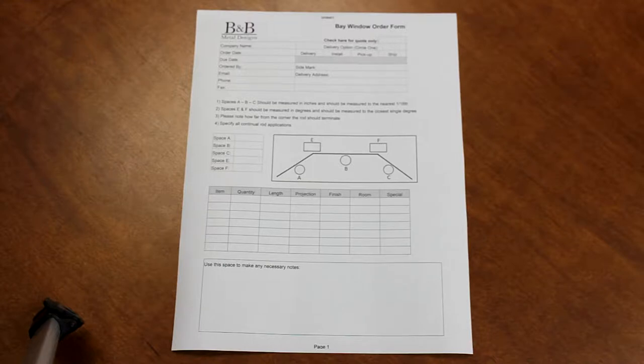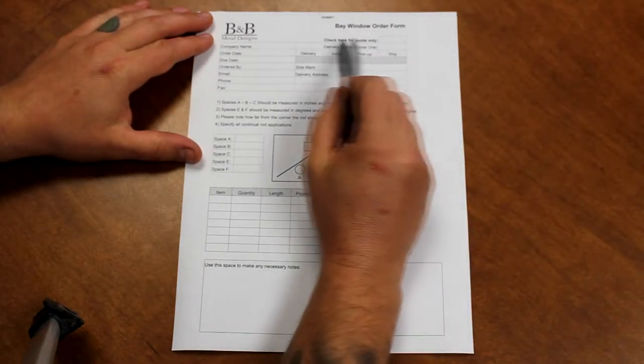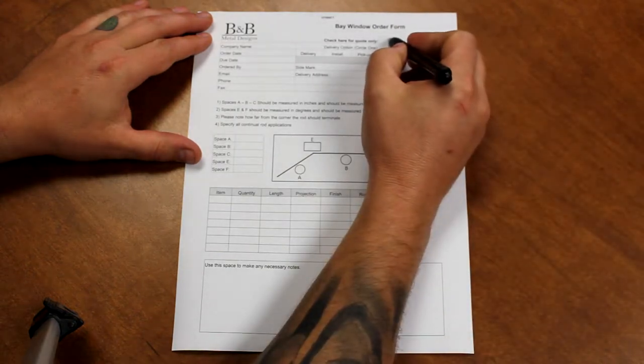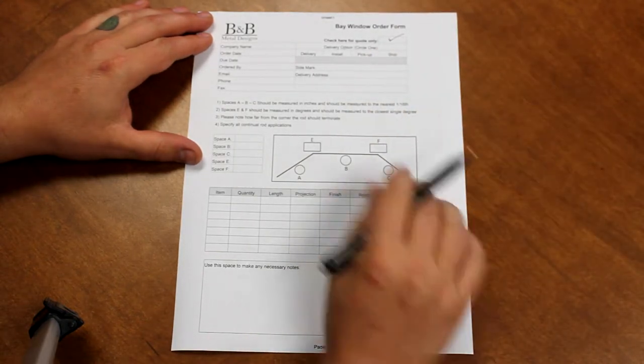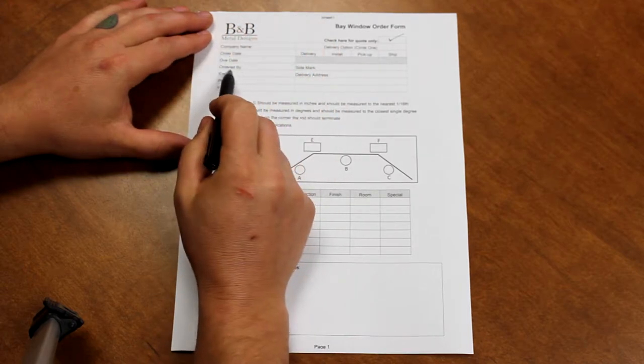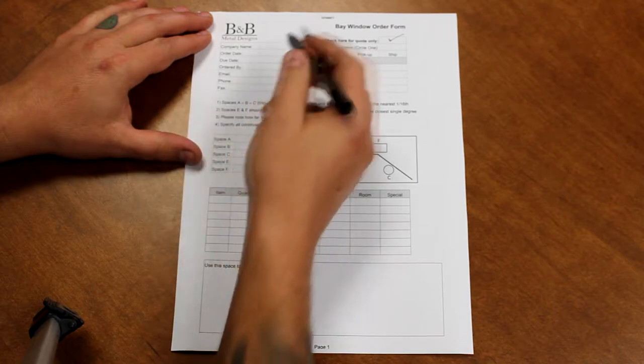The first thing that we're going to do here on our order form is indicate whether or not this is going to be a quote or an order. From there we're going to fill out the basic information for our company such as the company name, your name, due date, email, and a few other little things.